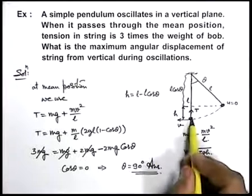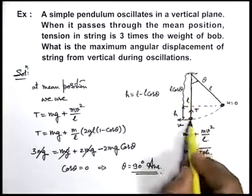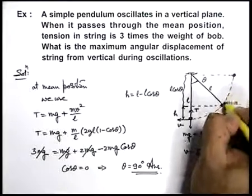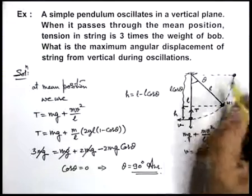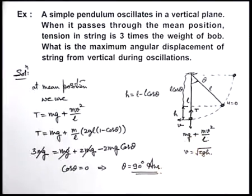That means in this question, maximum angular displacement of bob from the vertical position is 90 degree, that means when the string will be horizontal from which the bob starts, then only at the bottom most point the tension will be 3 times the weight of the bob. Thank you.